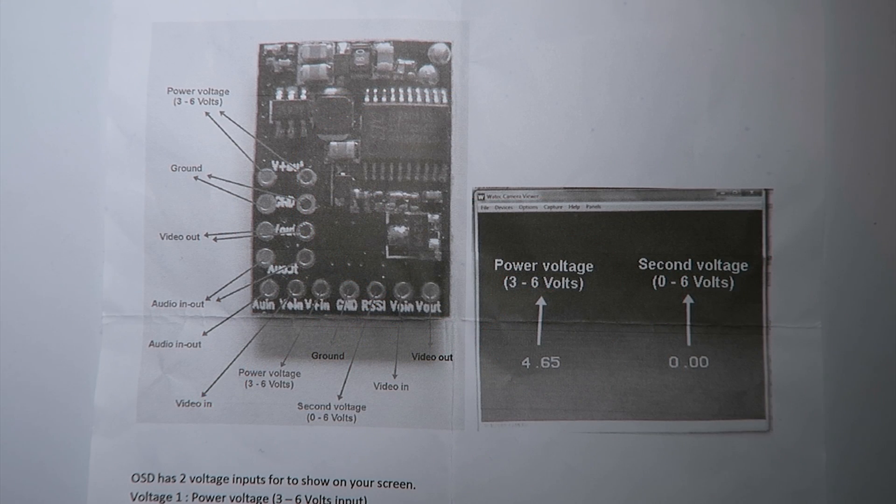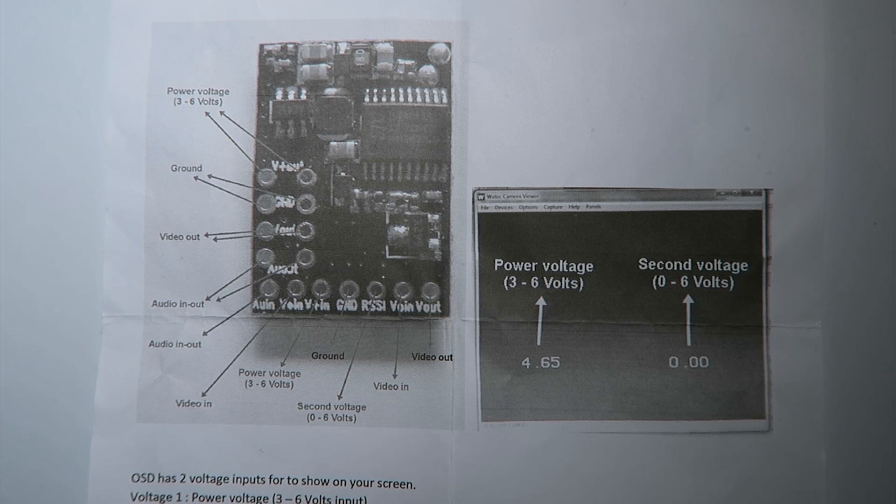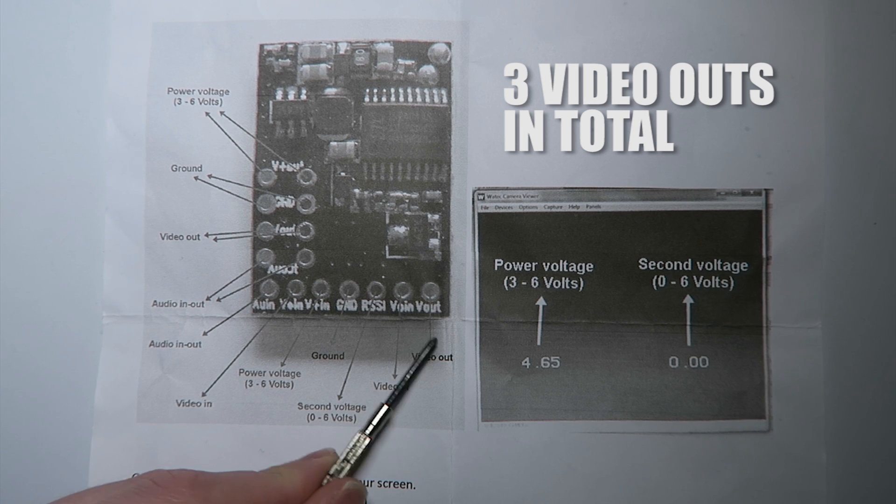It accepts two inputs. One displays 3 to 6 volts and the other displays 0 to 6 volts. So far, it does not have a built-in regulator, so the power it inputs is the same as it outputs. As well as two voltage inputs, we have the option for two video outputs. However, they both output the same OSD screen.